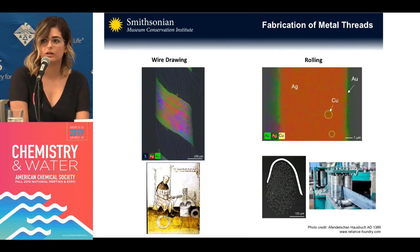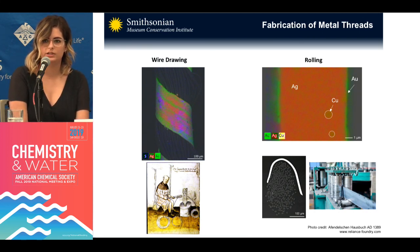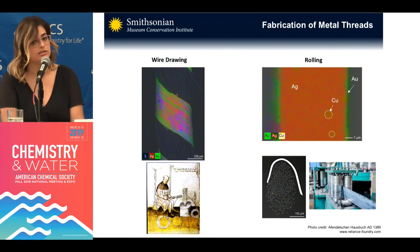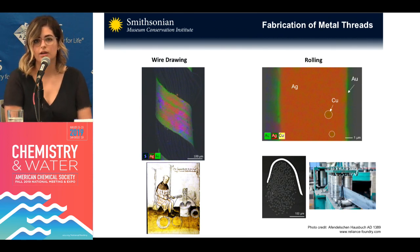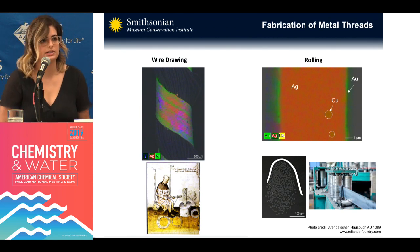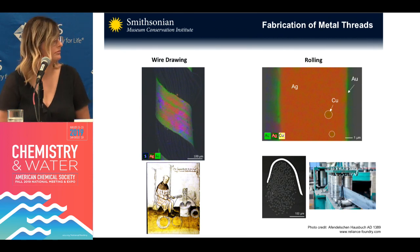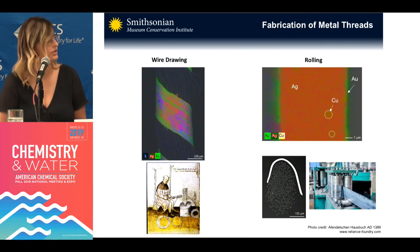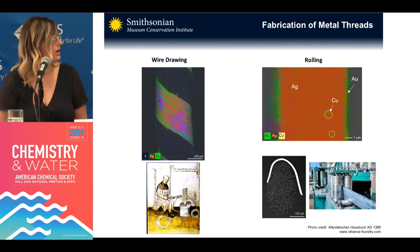The rolling mill is a newer technique — it was first invented in the 1500s, and it's still in use today. It's basically like a pasta press that will flatten out the wire to make these strips.